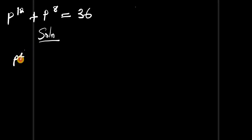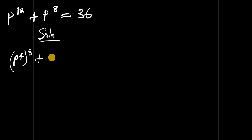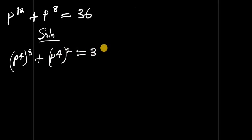We rewrite p to the power of 12 as (p to the power of 4) to the power of 3, plus p to the power of 8, which we can rewrite as (p to the power of 4) to the power of 2, and this equals 36.